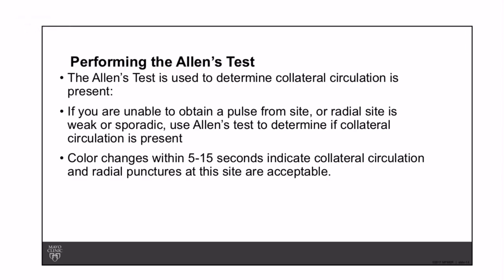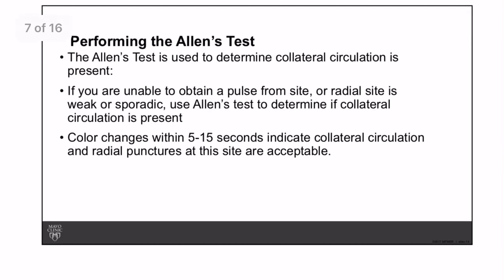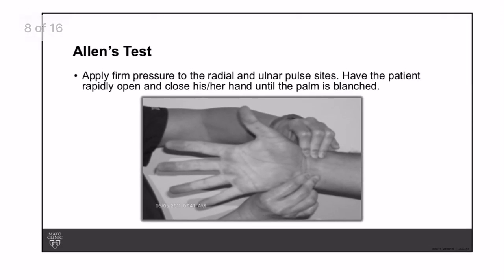The Allen's test is used to determine if collateral circulation is present. If the radial site is weak or spotty, perform the Allen's test. Apply firm pressure to both the radial and ulnar arteries on the same hand simultaneously. Have the patient rapidly open and close their hand until the palm is blanched.